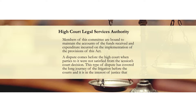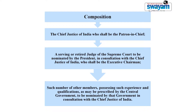District Legal Services Authority. The District Legal Services Authority works at the district level. It consists of the district judge who shall be the chairman, and such number of other members possessing the required qualification and experience as may be prescribed by the state government, to be nominated by the government in consultation with the Chief Justice of the High Court.